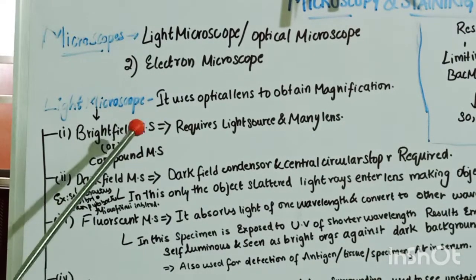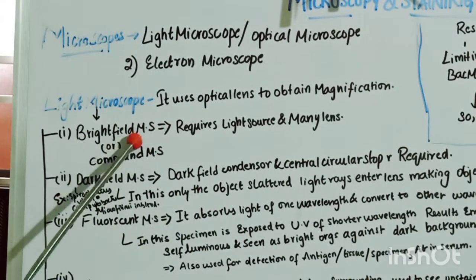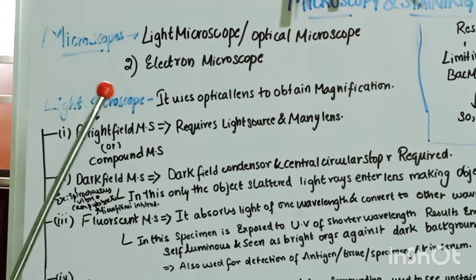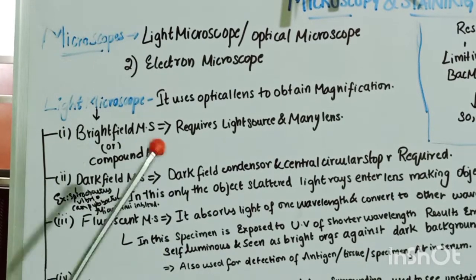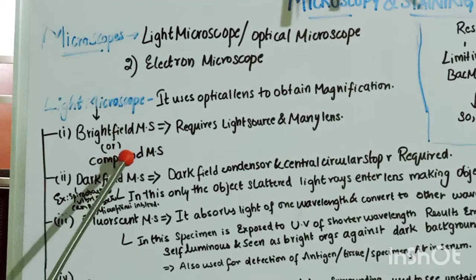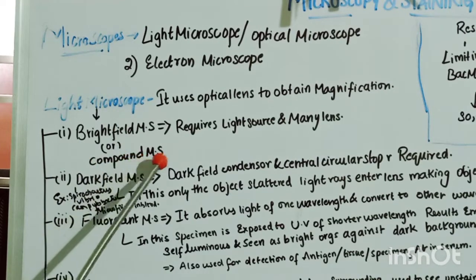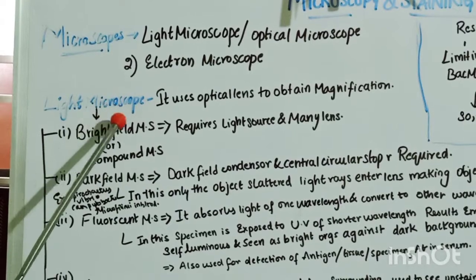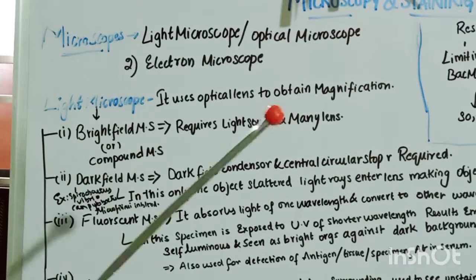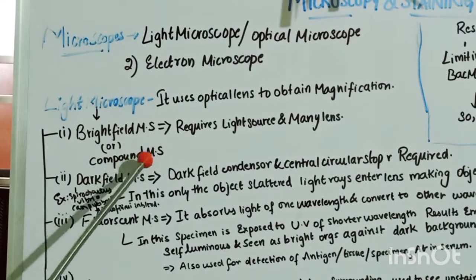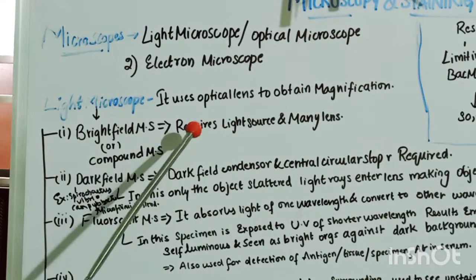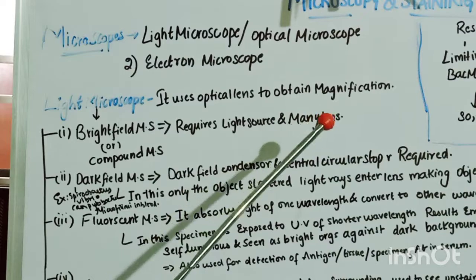The bright field microscope is also known as the compound microscope. Compound means it has many lenses, while a simple microscope has only one lens. The bright field microscope requires a light source and many lenses.